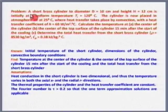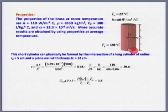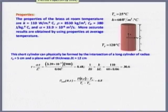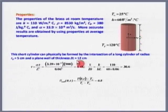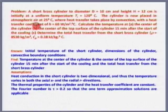This problem: a short brass cylinder of diameter 10 cm and height 12 cm is initially at a uniform temperature of 120°C. We break it into two cylinders — the plane wall for the height (2L = 12 cm, so L = 6 cm) and the long cylinder for the radius (r₀ = 5 cm). This is how we make the short cylinder problem a product of a plane wall solution and a long cylinder solution. Note it is 2L = 12 cm, not L — that is the major difference students must notice.